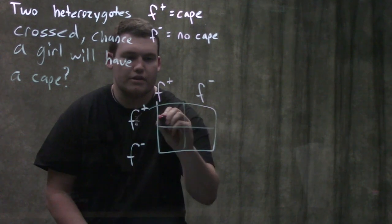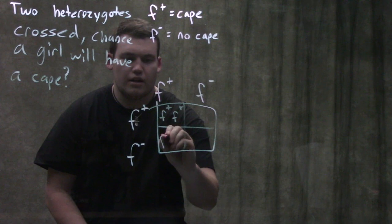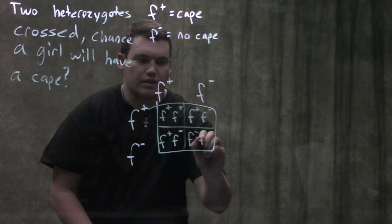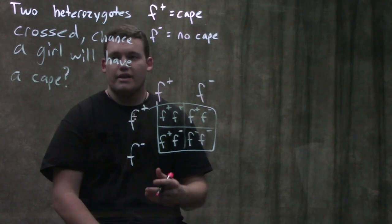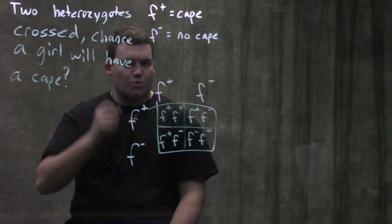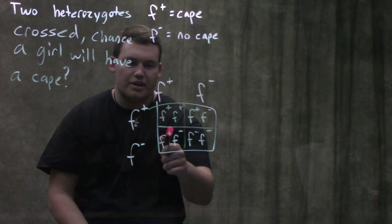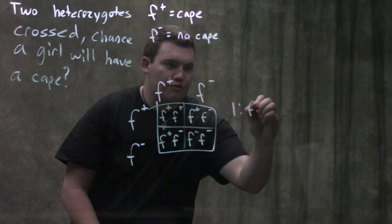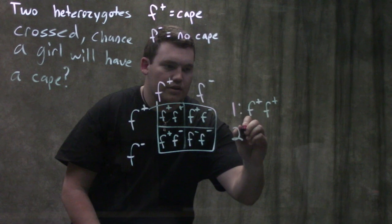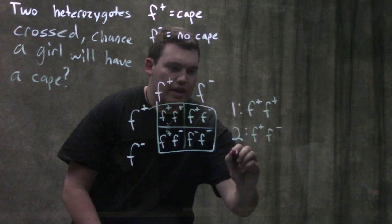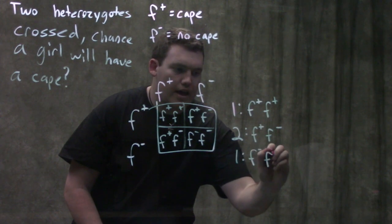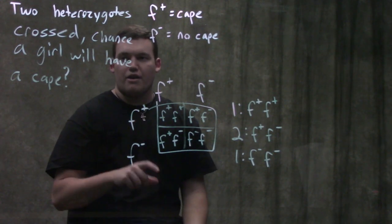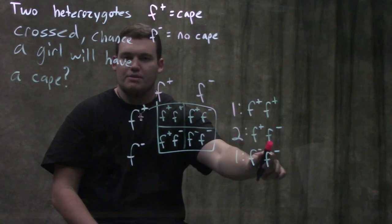Working through the Punnett square gives us: f-plus f-plus, f-plus f-minus, f-plus f-minus, and f-minus f-minus. That's a 1:2:1 ratio — exactly what we'd expect. The question now becomes: one to two to one of what? We've got one f-plus f-plus, two f-plus f-minus, and one f-minus f-minus. Don't write phenotypes yet — just record the genotypes, because phenotype depends on which sex we're talking about.